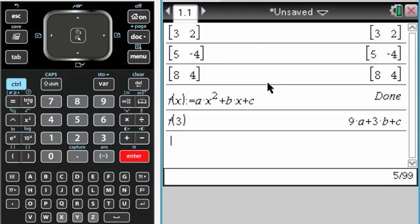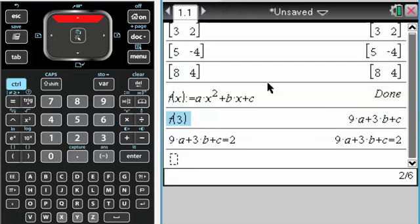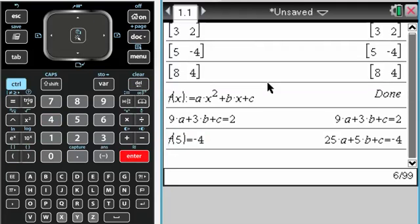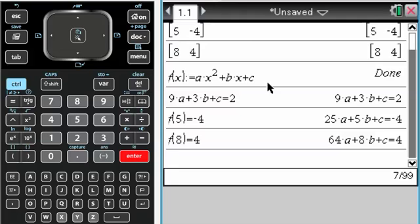So if I evaluate f at 3, I know that that's going to have to equal 2. That gives me one equation. If I evaluate f at 5, I know it has to equal negative 4. And if I evaluate f at 8, I know that it has to give me positive 4. So now I have three equations in three unknowns, which means I can solve it.